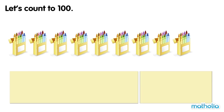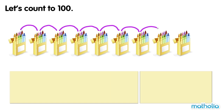There are 9 boxes of crayons. How many crayons are there? 10, 20, 30, 40, 50, 60, 70, 80, 90. There are 90 crayons. 9 tens equals 90.